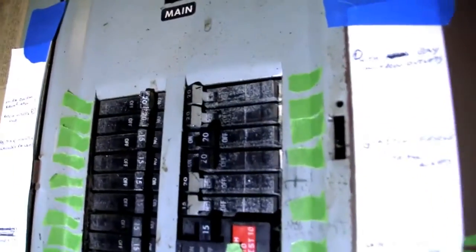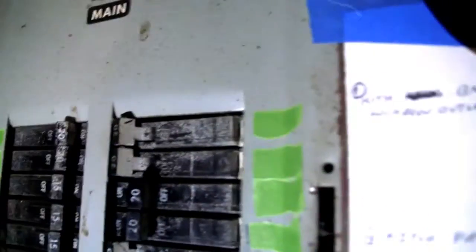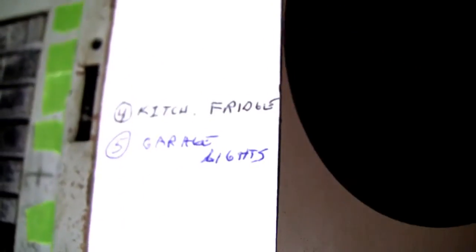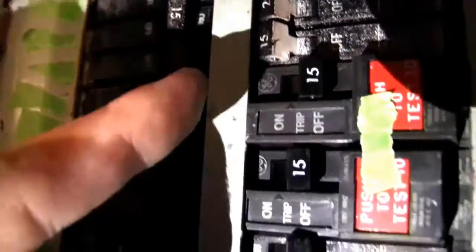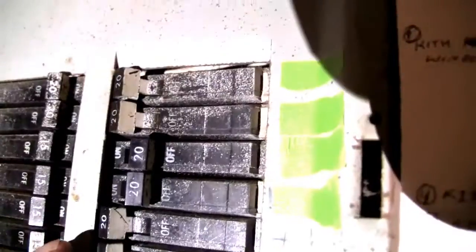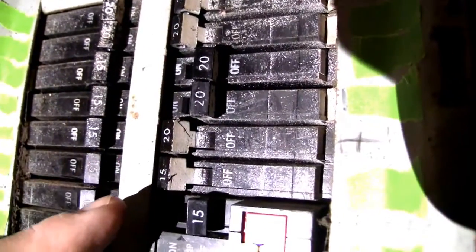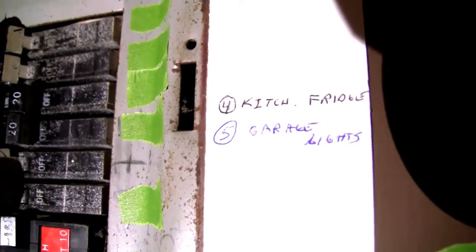Now I'm over at my electric panel and what I need to do is find the circuit that's running the garage lights. I know it's number five on the right and as you look at these different circuits, you can see that they have different numbers on them. So this is the amperage. This 20 means it's 20 amps. This 15 means it's 15 amps.